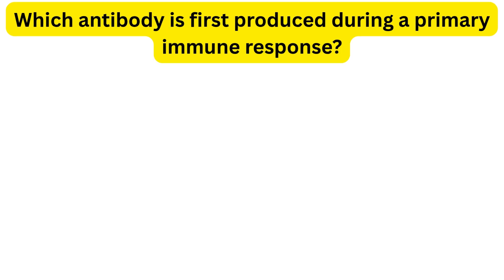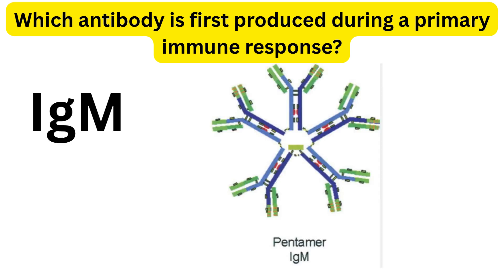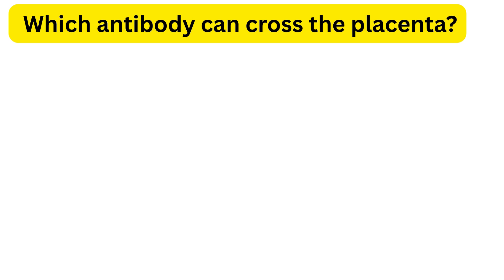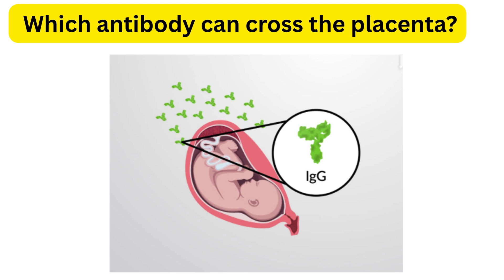Next question: which antibody is first produced during a primary immune response? The answer is IgM — it appears early in the reaction, and later IgG is produced for long-term protection. Which antibody can cross the placenta? IgG is the only antibody that can cross the placenta from mother to fetus.